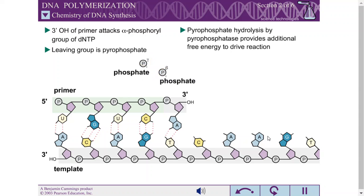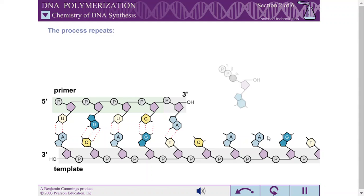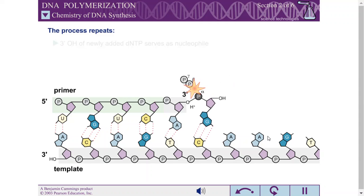The free energy change for this reaction is rather small; however, additional free energy is provided by the rapid hydrolysis of the pyrophosphate into two phosphate groups. This reaction is catalyzed by the enzyme pyrophosphatase. The process can then be repeated, with the three-prime hydroxyl of the newly added dNTP serving as the nucleophile. The chemistry of DNA synthesis requires that DNA be made in a polar fashion.